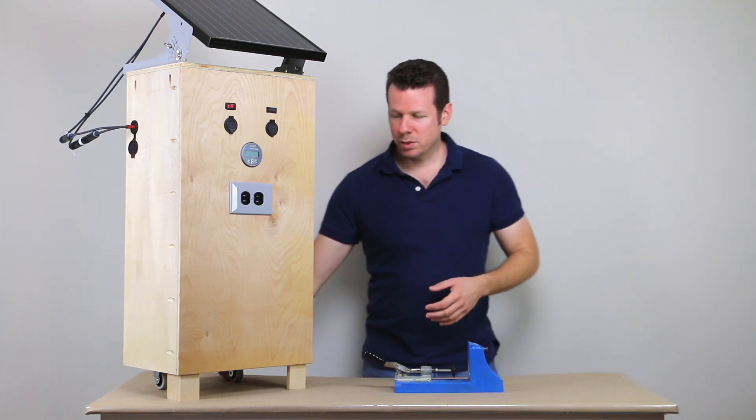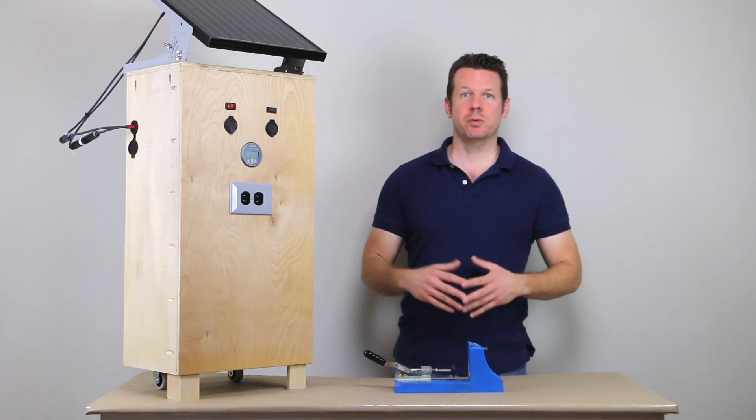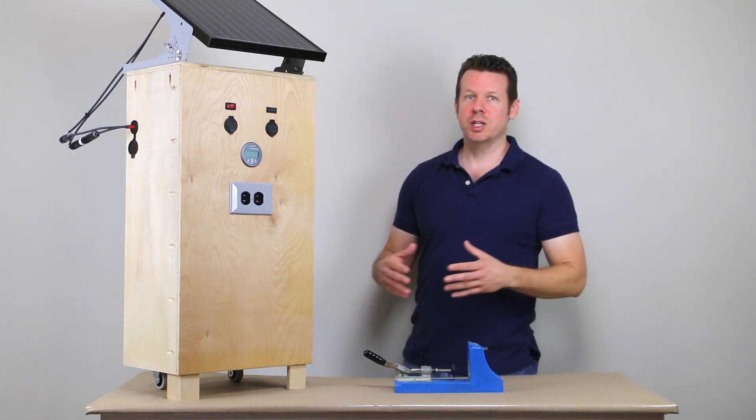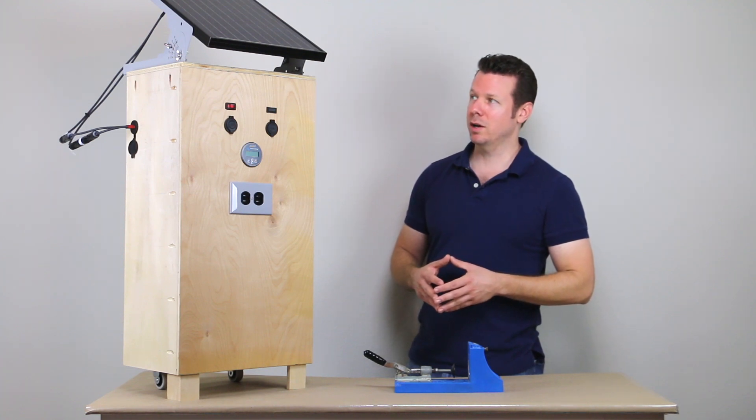And lastly, you can see we have some little casters on the bottom and the feet on the front. That way you can roll the unit around and transport it, move it to where you need without having to completely lift it up.